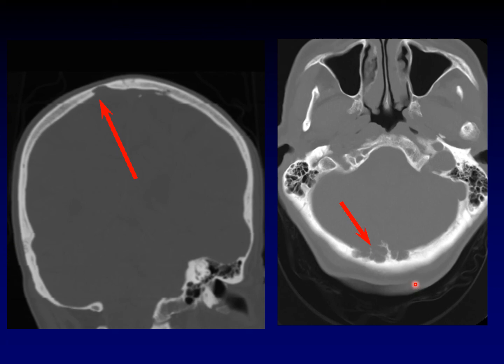Arachnoid granulations are a normal structure. They're usually much smaller and don't remodel the skull or the veins, and they are used to reabsorb CSF back into the venous system. So this one: venous lake. This one: arachnoid granulation. You can tell them apart by their configurations.